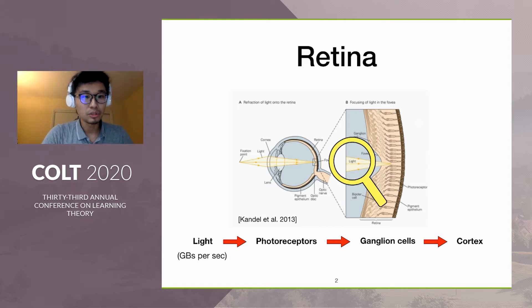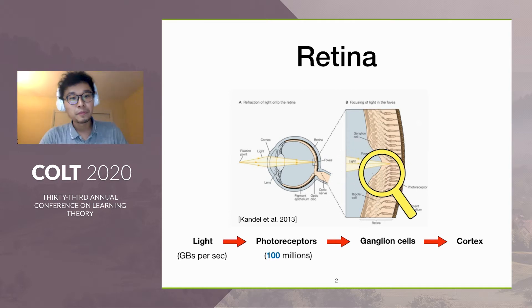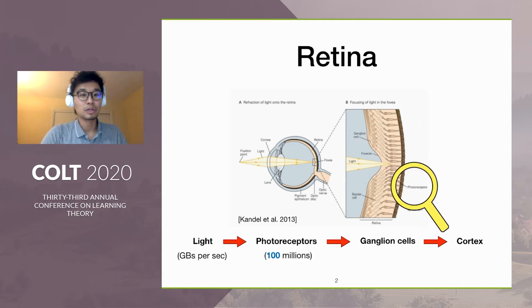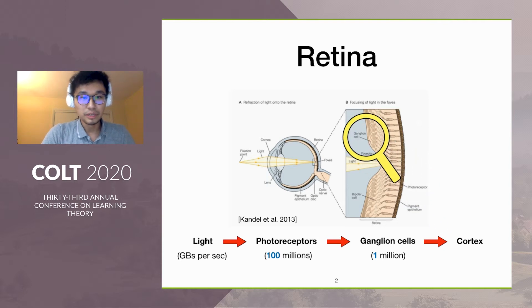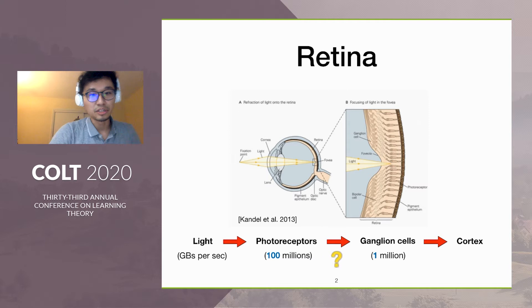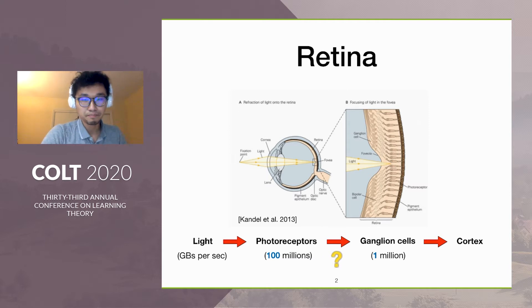The light is about the order of gigabytes per second, and there are about 100 million photoreceptor cells, while there's only a million ganglion cells in the output layer. So this suggests that there's a huge compression going on in the retina.